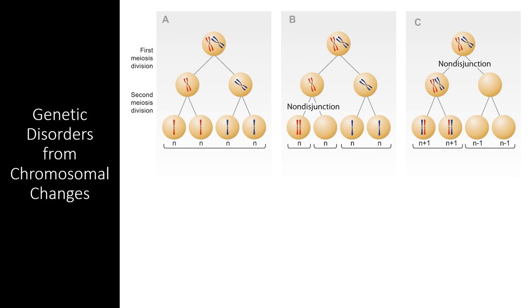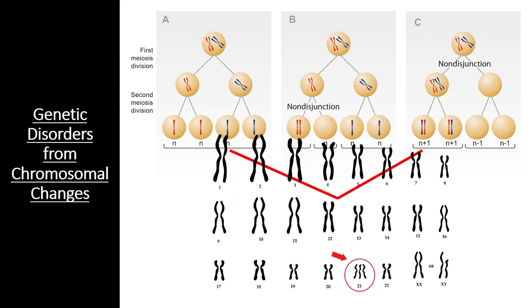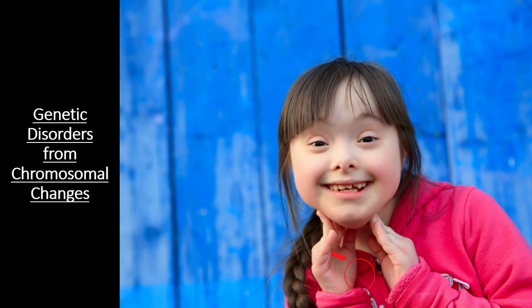While the genetic disorders we've looked at previously all involved mutated alleles, other genetic disorders are not caused by mutated alleles. Rather, they are caused by abnormal meiosis events that lead to too many chromosomes in the resulting gamete. These are known as non-disjunction events and they can happen in meiosis 1 or meiosis 2. If a gamete with two copies of the same chromosome merges with a normal chromosome during fertilization, this can lead to three copies of the same chromosome in a single zygote — a condition known as trisomy.